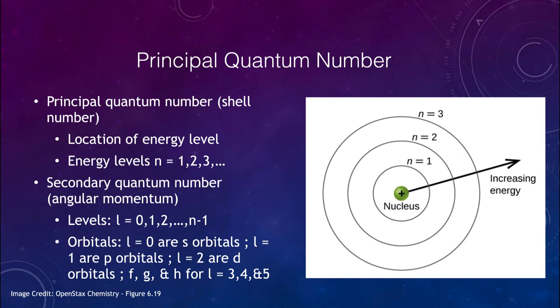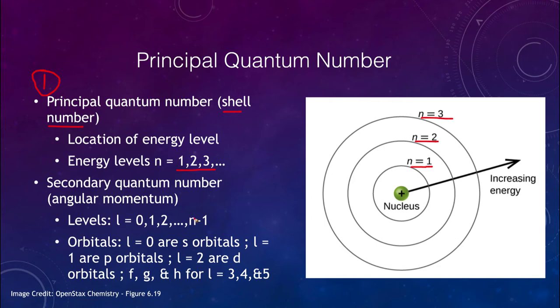Now we want to look at quantum numbers for most of the rest of this lecture. We have four quantum numbers associated with electrons. The first is the principal quantum number, which tells you the shell an electron is in. Energy levels are given by quantum numbers of one, two, three, and so on. n equals one is the lowest state closest to the nucleus; two is the next, and three is above that. Energy increases as you move up in energy levels.